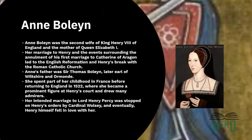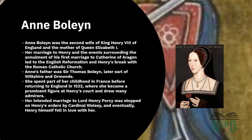Anne Boleyn was the second wife of King Henry VIII of England and the mother of Queen Elizabeth I. Her marriage to Henry and the events surrounding the annulment of his first marriage to Catherine of Aragon led to the English Reformation and Henry's break with the Roman Catholic Church. Anne's father was Sir Thomas Boleyn, later Earl of Wiltshire and Ormond. After spending some of her childhood in France, she returned to England in 1522 and became a prominent figure at Henry's court, attracting many admirers. Her intended marriage to Lord Henry Percy was stopped on Henry's orders by Cardinal Wolsey, and at some point the King himself fell in love with her.